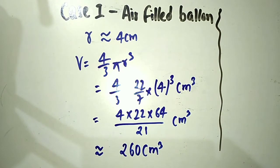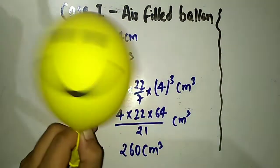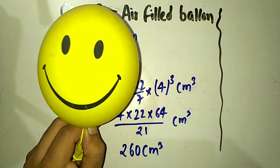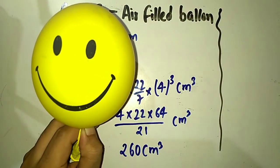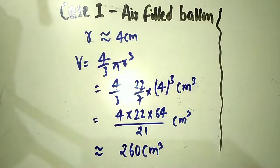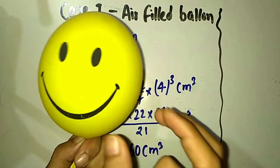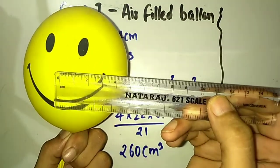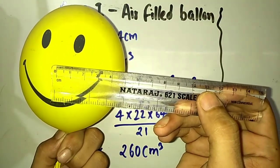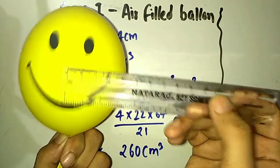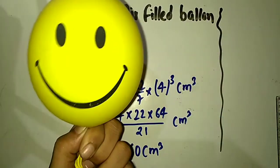Here in my hand there is a baby balloon which is filled with air. You can see that the shape of this air-filled balloon is almost a sphere with a radius of around 4 centimeters.